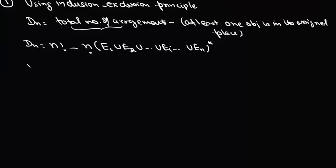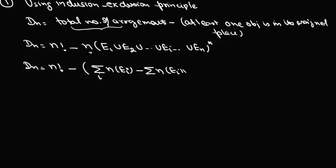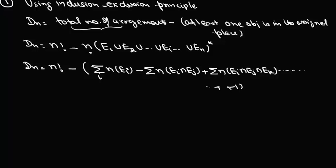Using inclusion-exclusion, we can write D(n) = n! minus the summation of |Ei| over all i, plus the summation of |Ei ∩ Ej| for two objects in assigned places, minus the summation of |Ei ∩ Ej ∩ Ek| for three objects, and so on, up to (-1)^(n-1) times |E1 ∩ E2 ∩ ... ∩ En| when all objects are in their correct positions.